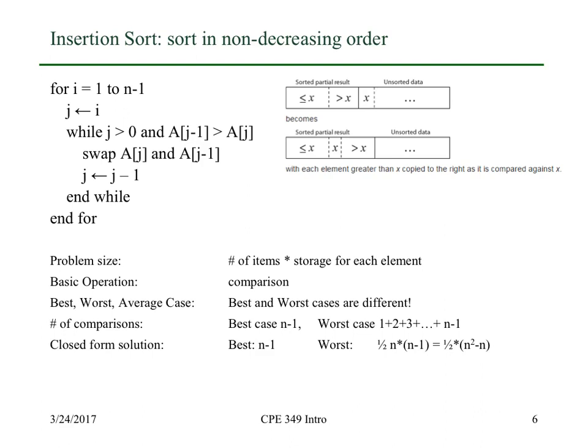And in the best case, since you're only going through doing one comparison here, and you never actually execute the loop because you don't have to change the ordering at all, you're going to basically do n minus one comparisons. So in the best case, n minus one is the number of comparisons, and there's no work you have to do to get the closed form solution for it.